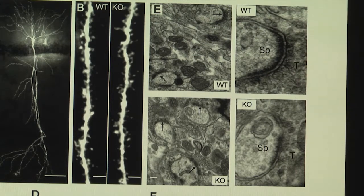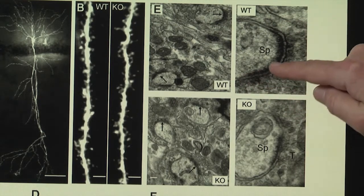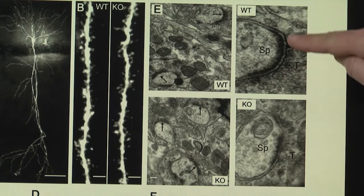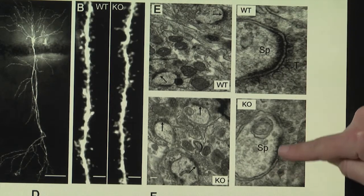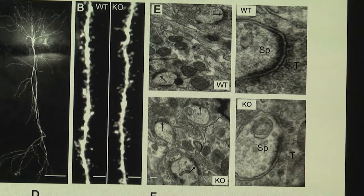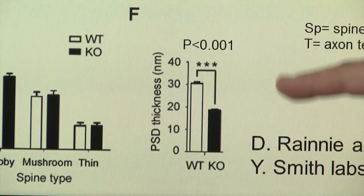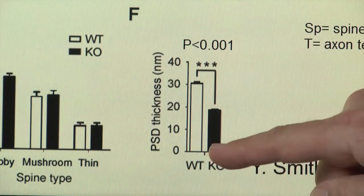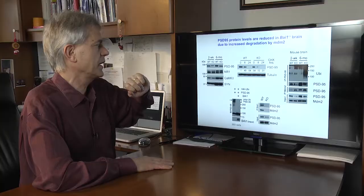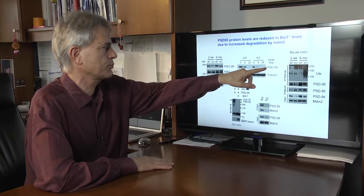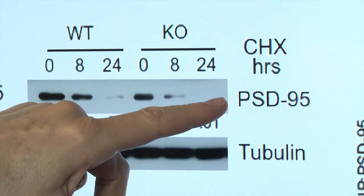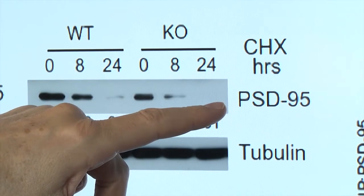You can see here on these micrographs it is very dark, very long, very dark material. Whereas in the knockout animal, it is much paler and much thinner. We found that the thickness of the post-synaptic density was reduced in the knockout animal compared to control. The reason for this reduction is that the protein is much less stable in the knockout than in the wild type brain.